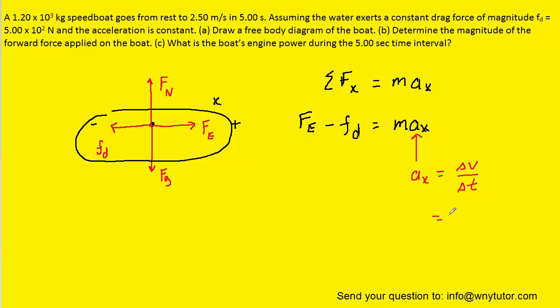And for change in velocity, we can actually write that as final velocity minus initial velocity. And we were told the final velocity of the boat was 2.5 meters per second, and the initial was zero, since it's starting from rest. So we could plug in 2.5 for final, zero for initial, and then the time interval was five seconds.